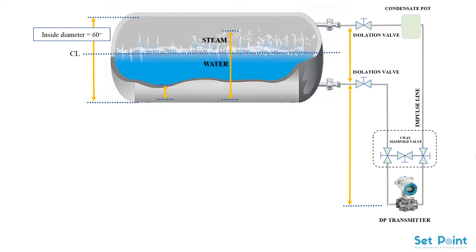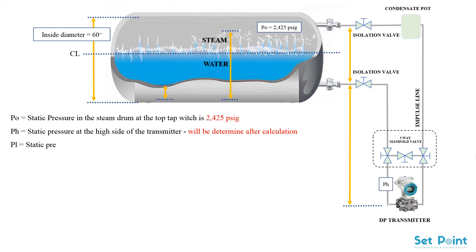Now let's extract the values from the available tables based on the working pressure. PO equals static pressure in the steam drum at the top tap which is 2425 pounds per square gauge. pH equals static pressure at the high side of the transmitter. PI equals static pressure at the low side of the transmitter. DS equals density of saturated steam at operating conditions which is 7.24 pounds per cubic foot.